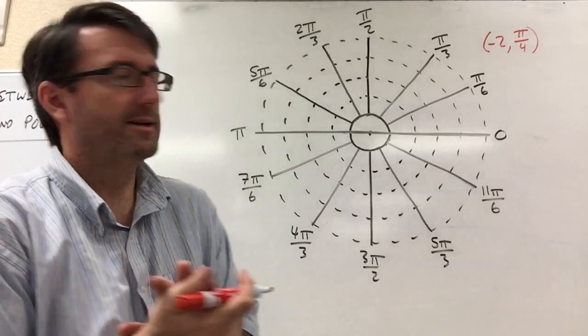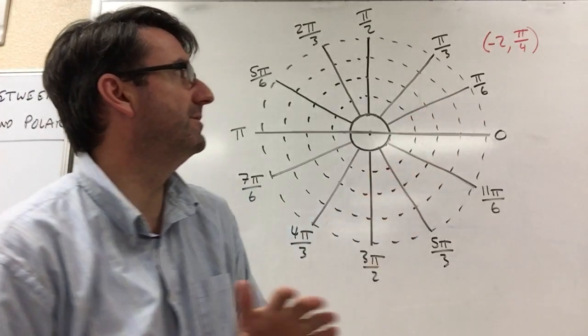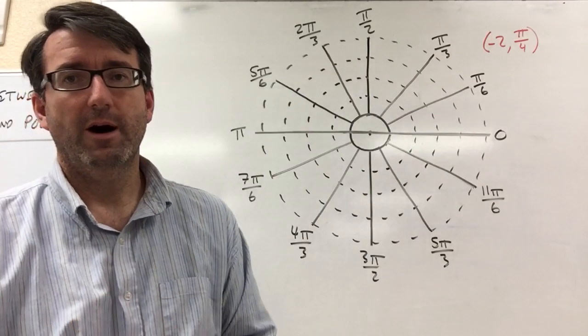All right, number one, we're asked to plot the point negative 2 pi over 4 on the polar grid.